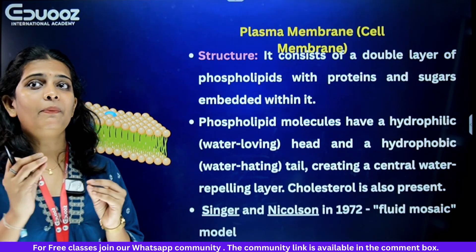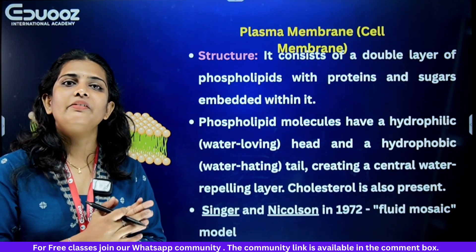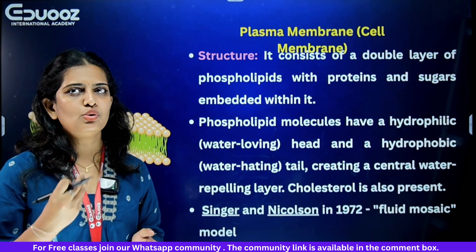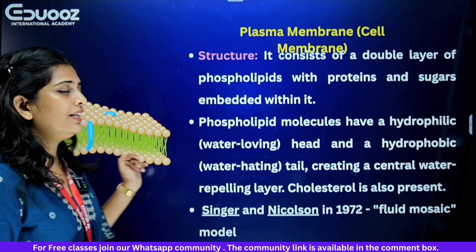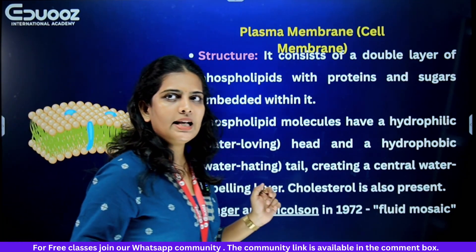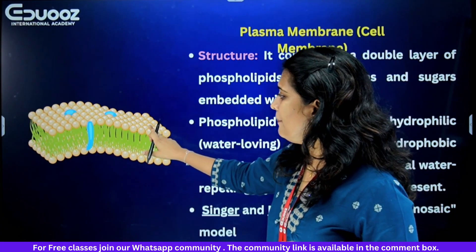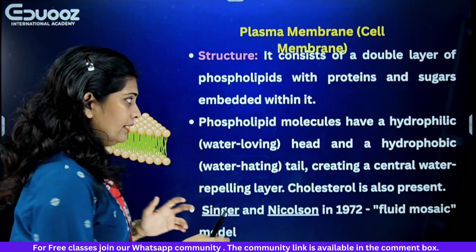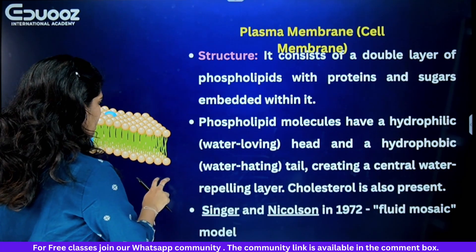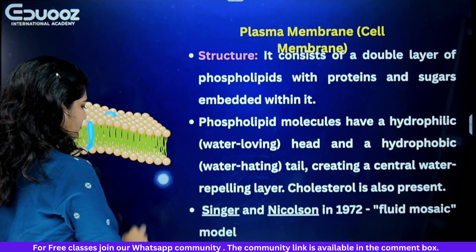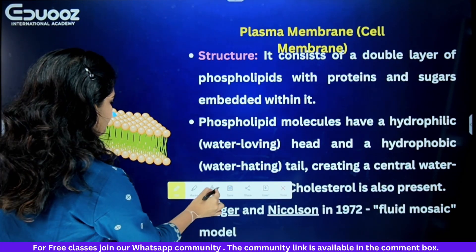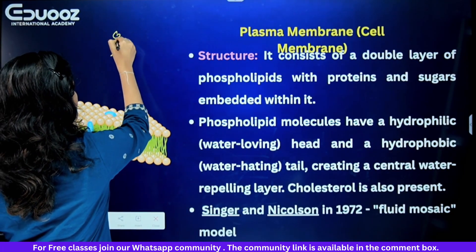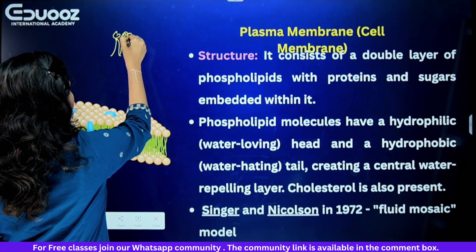Next, we are moving on to the plasma membrane. The plasma membrane is also called the cell membrane. It forms a double layer of phospholipid — that is, two layers. This is the phospholipid bilayer, where the head and tail are arranged facing each other.